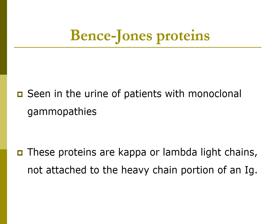Bence-Jones proteins are light chain proteins seen in the urine of people with multiple myeloma. To screen for Bence-Jones protein, heat the urine: this protein will precipitate at 60 to 70 degrees Celsius and dissolve at 100 degrees Celsius, but reappear when the sample is cooled. These proteins are kappa or lambda light chains not attached to the heavy chain portion of an immunoglobulin, and are seen in patients with monoclonal gammopathies.